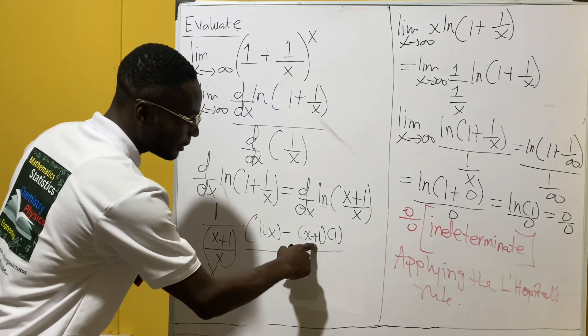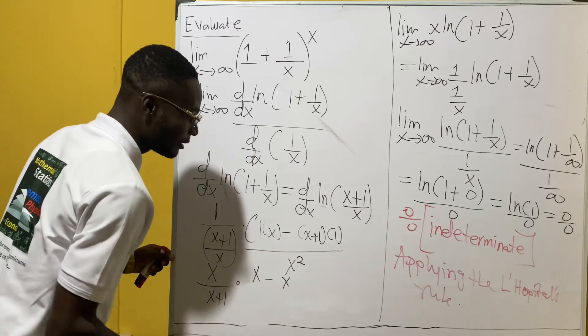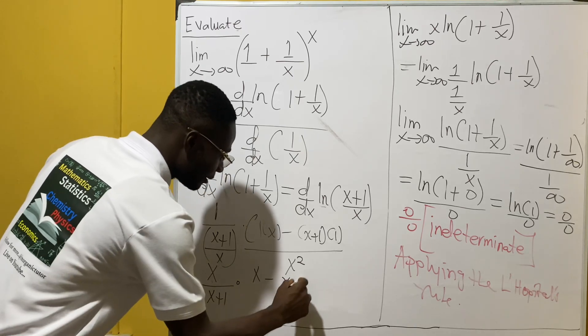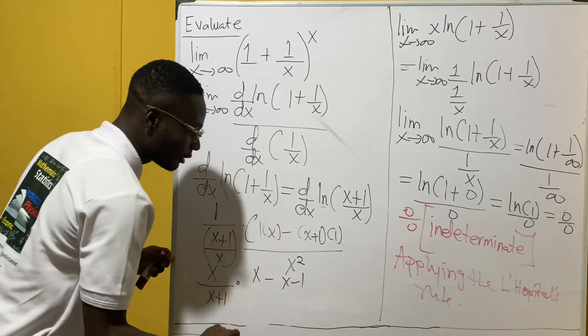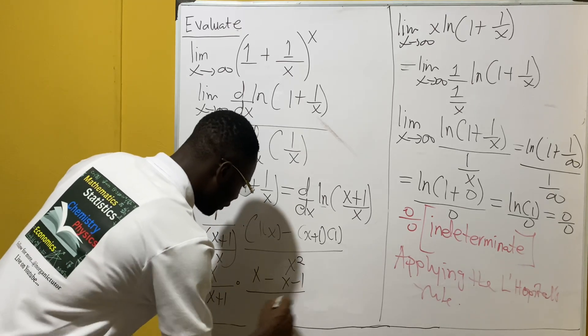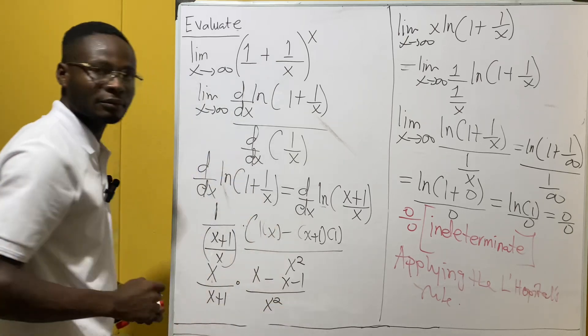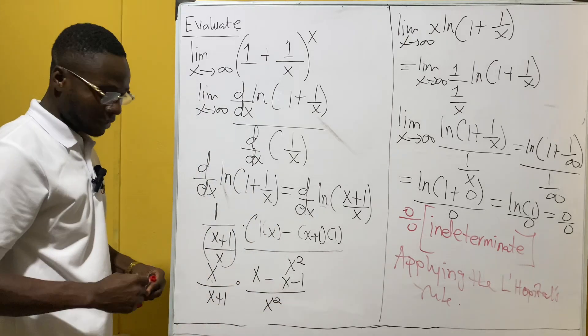Expanding the bracket we get x minus (x minus 1) all over x squared, and we know that 1/(x+1)/x is the same as x/(x+1).